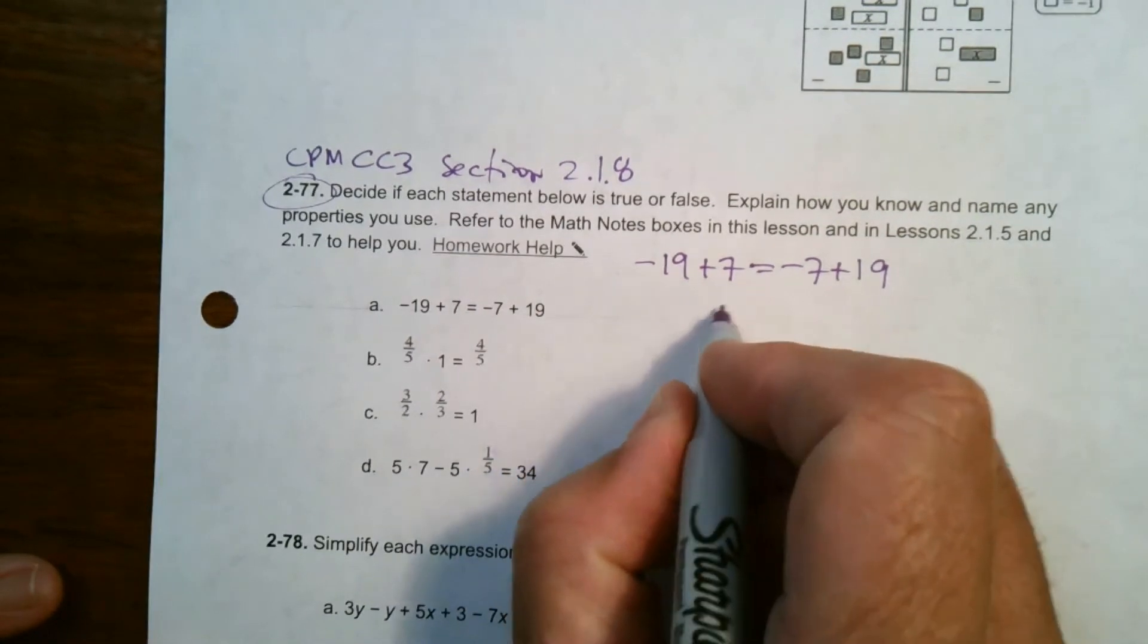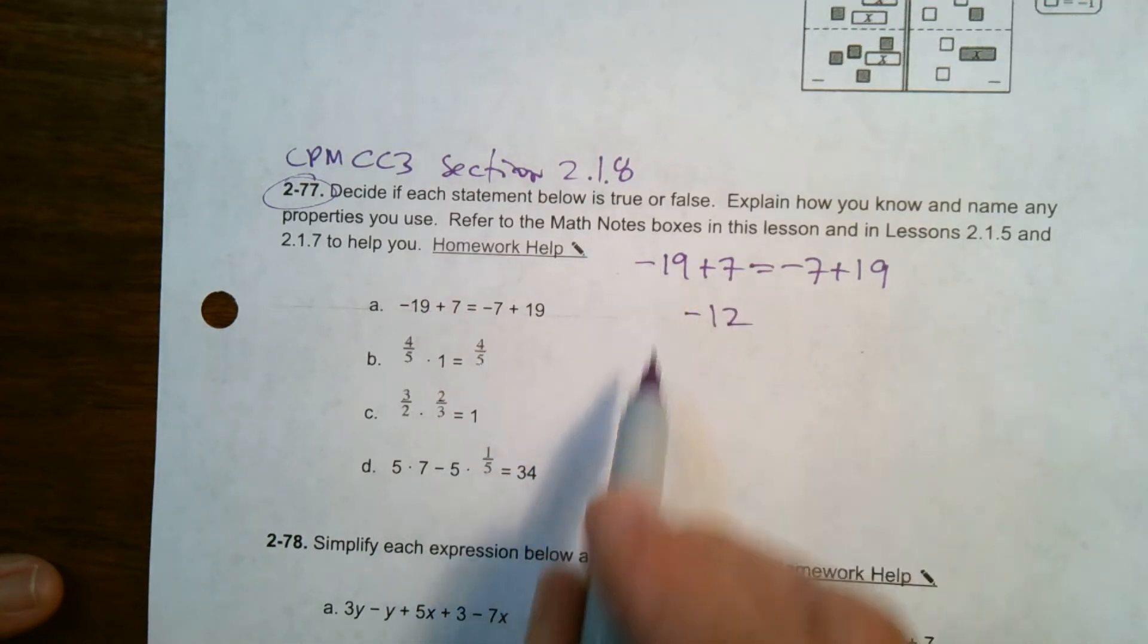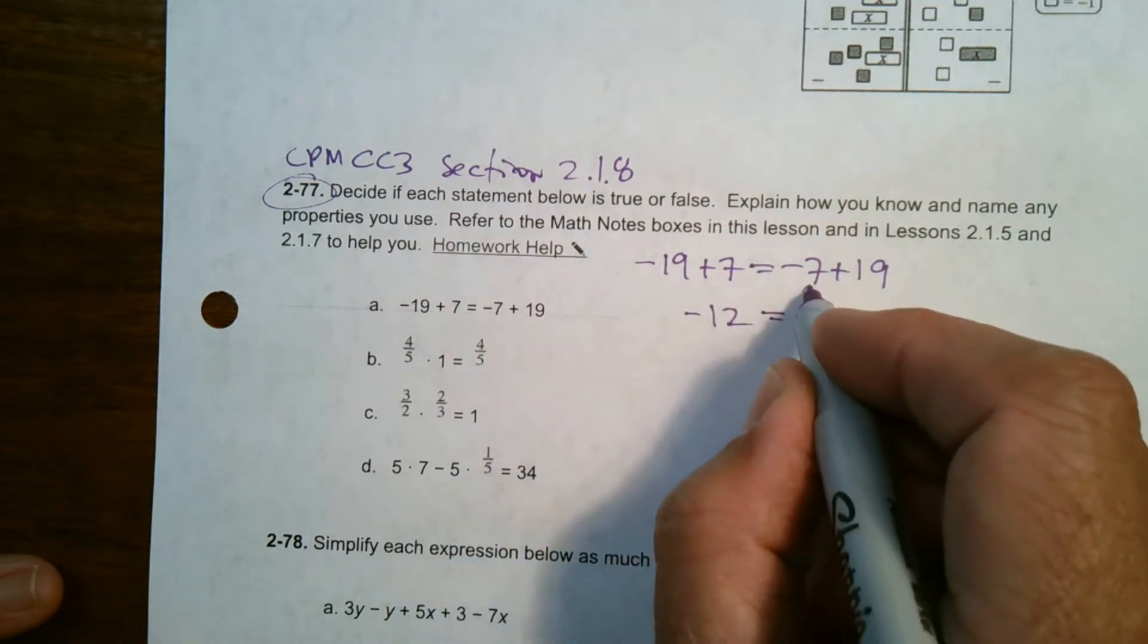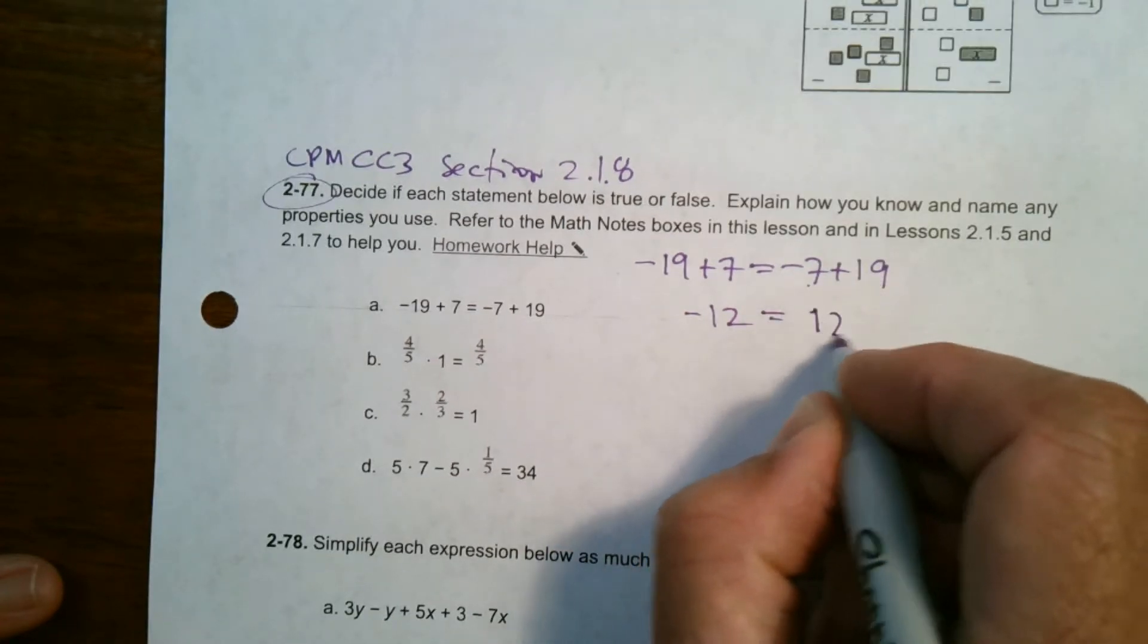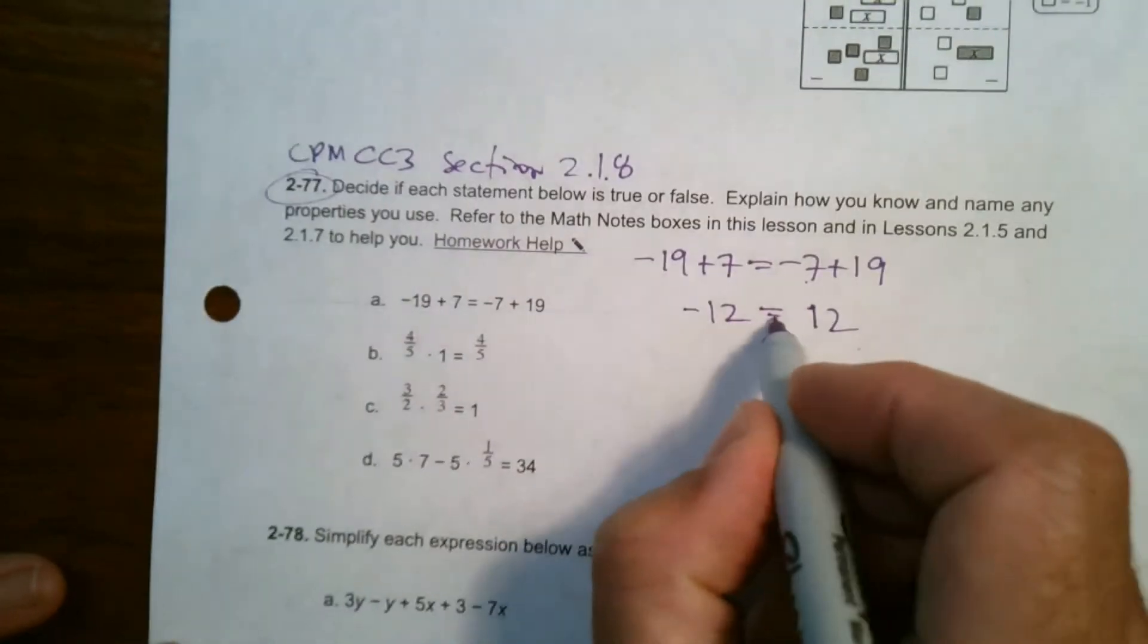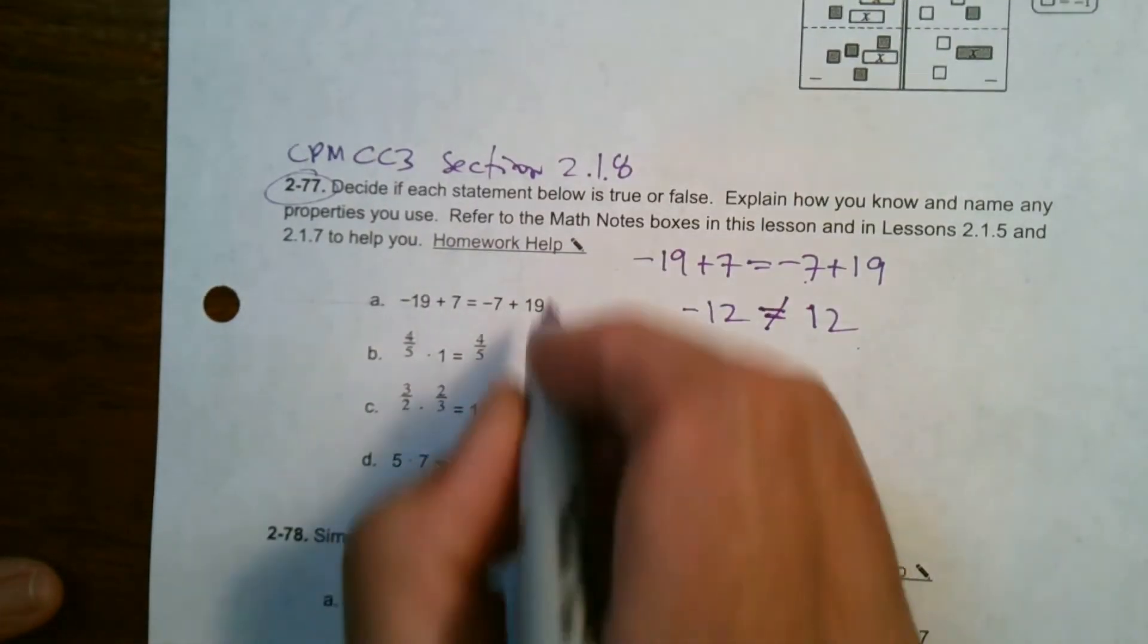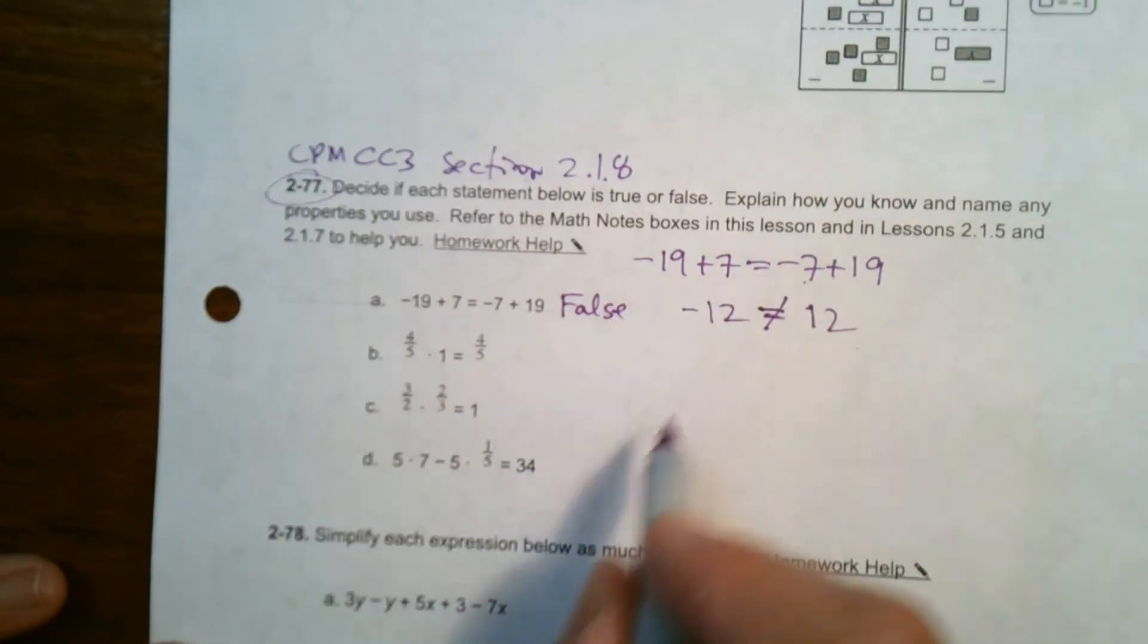So if we add those together, negative 19 plus 7 is negative 12. Adding opposite signs, you subtract the numbers, the bigger one keeps its sign. Negative 7 plus 19, again opposite signs, subtract the numbers, you get 12, and there's more positives, so it's positive 12. Negative 12 does not equal positive 12. So this one is false.